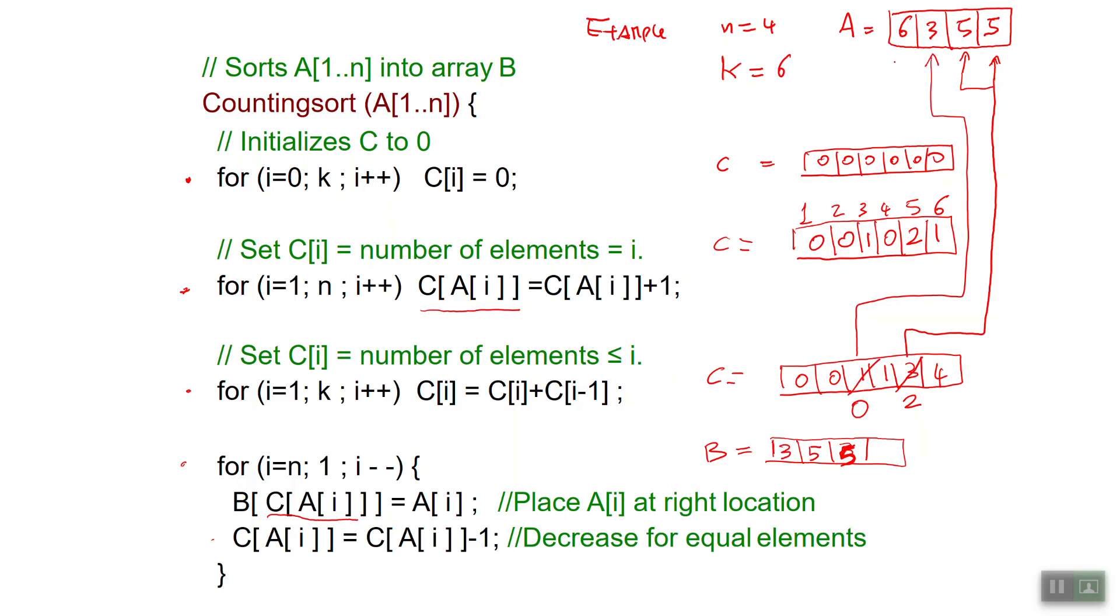Finally I read 6 in my input array. So I can go read the sixth location in the array C. That's a 4. So I can place the 6 in the fourth location. And I decrease this 4 and I make it a 3. And that's how counting sort works.